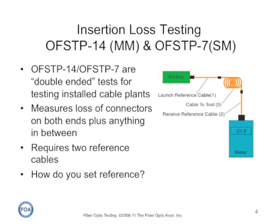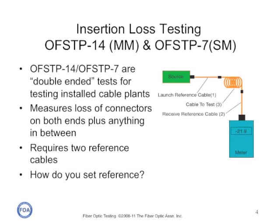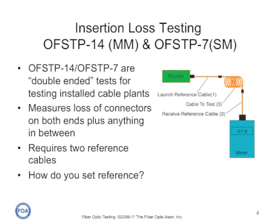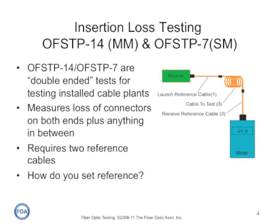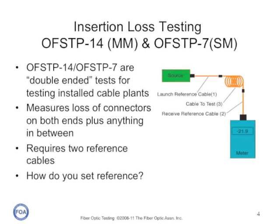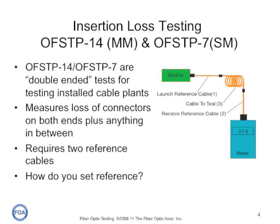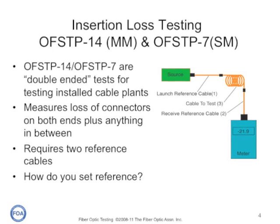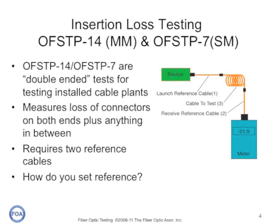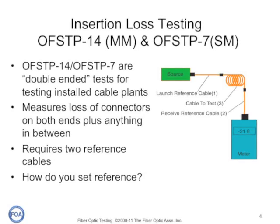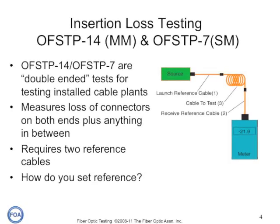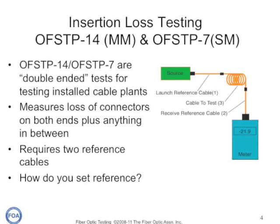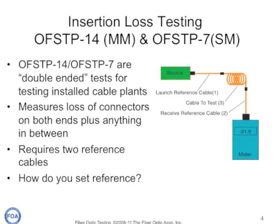We call this a double-ended test because we attach a source with a launch cable to one end of the cable plant and a meter with a receive cable to the far end. Because we're mating reference cables to both ends of the cable plant, we're able to test the connectors on the cable plant itself, plus we test for the loss of anything in the cable plant that causes loss. The real question is how do you set the reference, and the reference for zero dB is set in three different ways.